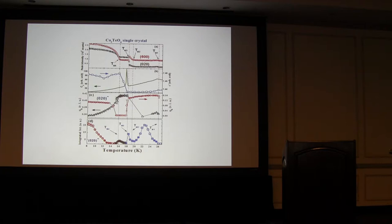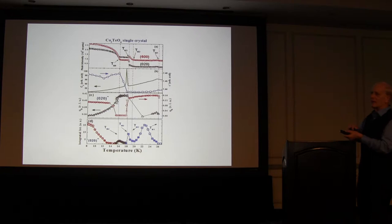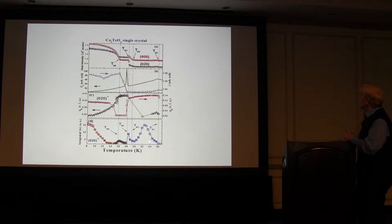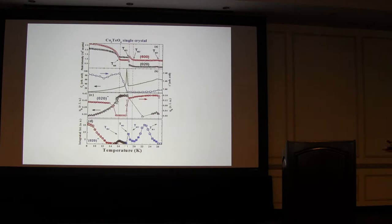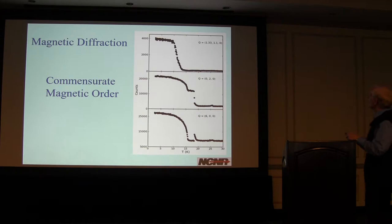A new irreducible representation—gamma three—comes in around 15 Kelvin. If you look at the incommensurate wave vectors, they're strongly temperature dependent. The H component changes a little as a function of temperature, then there's a first-order drop where the peak collapses in the K direction and then pops back up at the 15 Kelvin transition. At first ordering at 26 Kelvin, you have the incommensurate order with no commensurate order—it's purely incommensurate. The commensurate order comes in at lower temperatures, and both the intensity and wave vectors of the incommensurate order are strongly temperature dependent through these transitions.